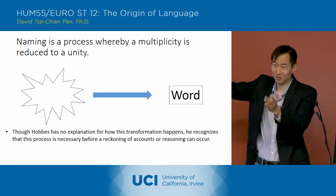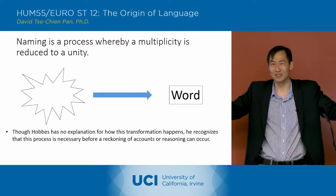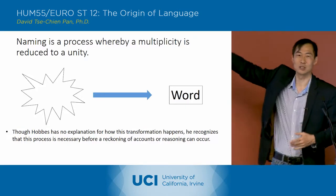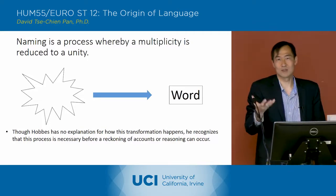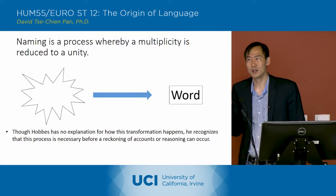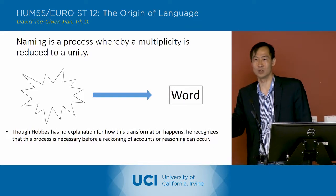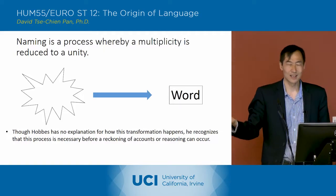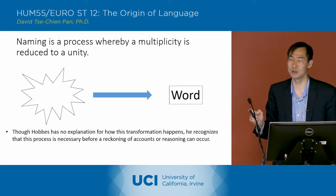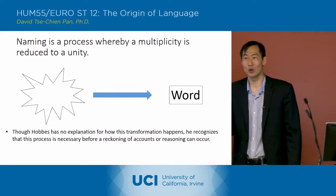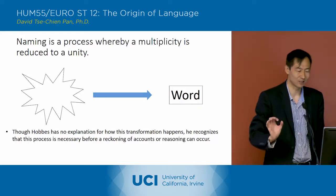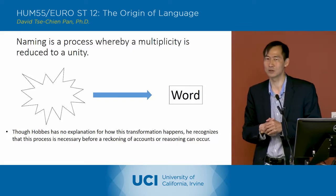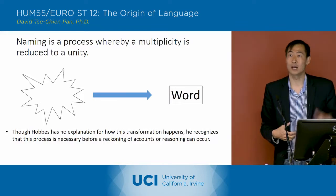So you've got this multiplicity — there are lots of things you could say about something — and you reduce it to just one word. That's the process he's describing of turning something into an account: essentially reducing something to a number in accounting, or reducing it to a word in language. He doesn't really explain how this transformation happens, but he recognizes it's necessary before any kind of reckoning or reasoning can occur.